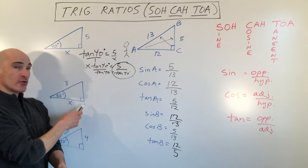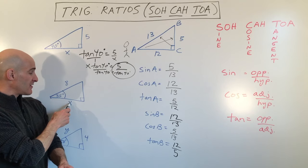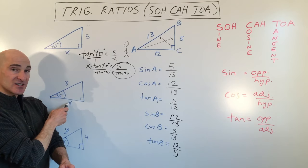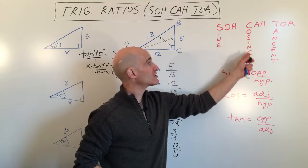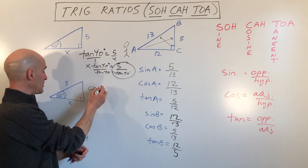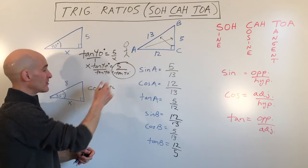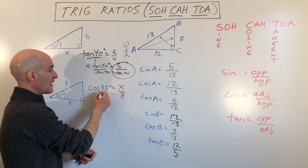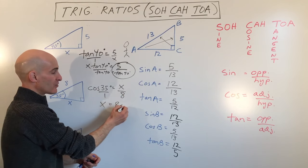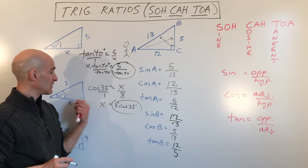In the next example, we have a right triangle with 35 degrees. We want the trig function that ties together the adjacent side and the hypotenuse — the hypotenuse is across from the right angle, and adjacent is next to. That's cosine. So cosine of 35 degrees equals x over 8. Cross multiplying gives x equals 8 times cosine of 35 degrees — ready to enter into your calculator.